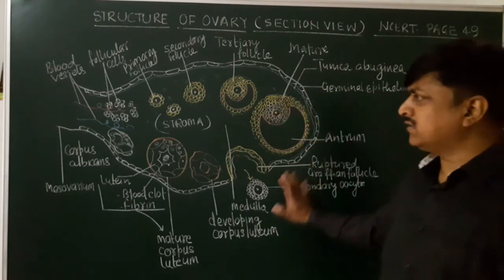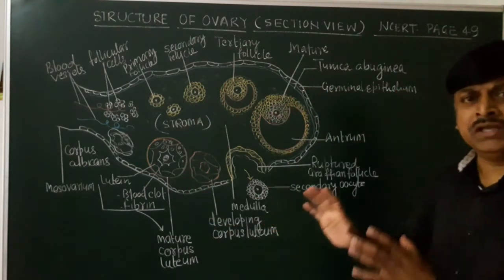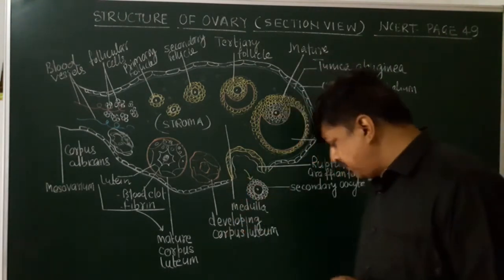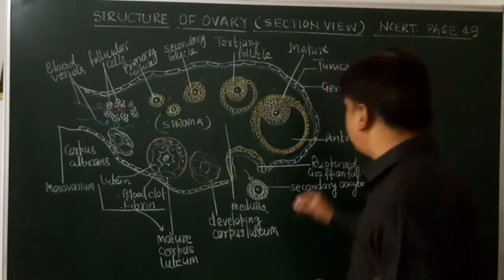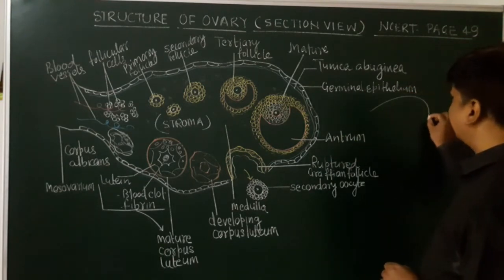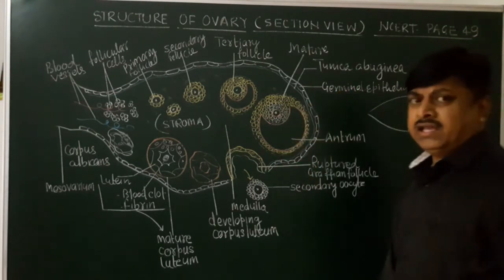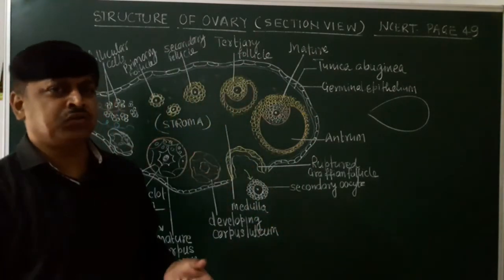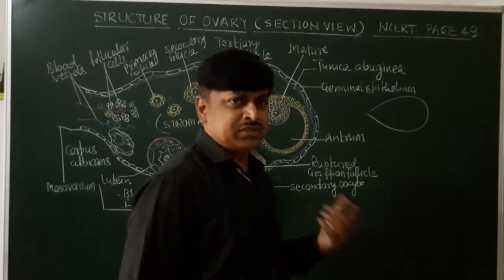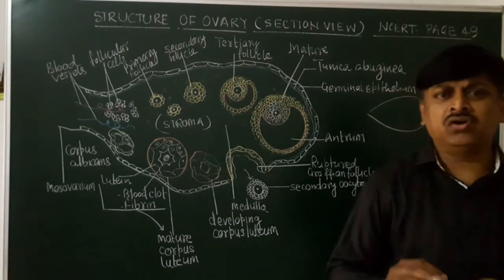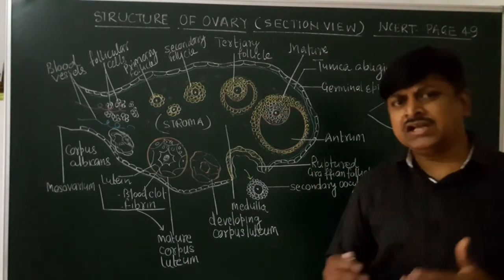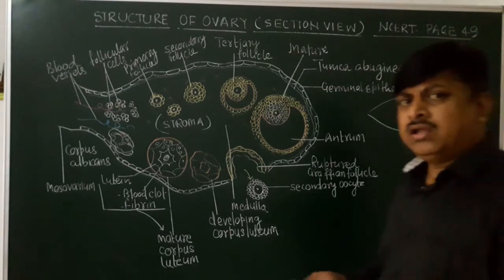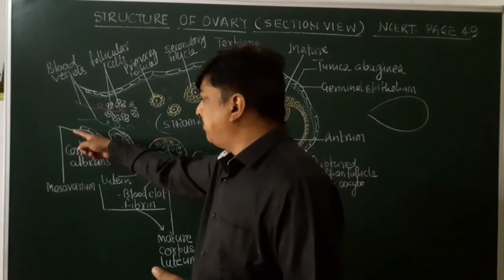The diagram is here in front of you. This is the human ovary. You already know that it is almond-shaped. It is about four centimetres in length, one centimetre in thickness, and two centimetres in diameter. This is about the external feature. The ovaries remain attached to the uterine wall through the mesovarium.